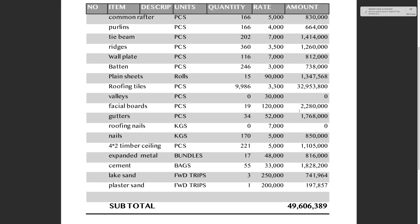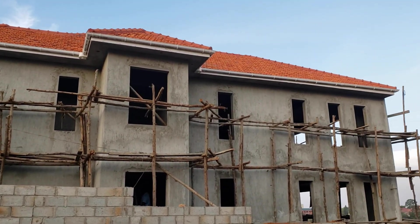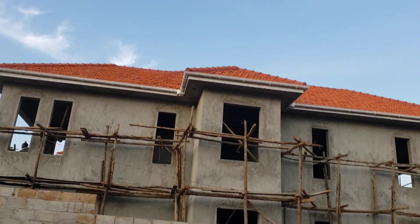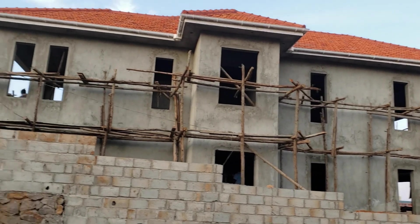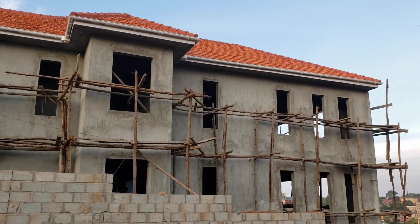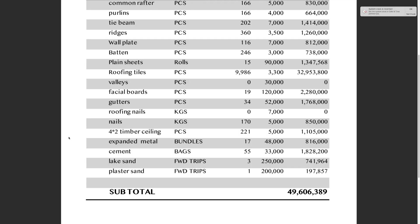Fascia boards — we bought 19 pieces of PVC fascia boards, each 5.8 meters long, at 120,000 shillings each, costing us 2,280,000 shillings. Gutters — we bought 34 pieces at 52,000 shillings each, costing us 1,768,000 shillings. Nails of four-inch, three-inch, and five-inch — combined, we bought 170 kg at 5,000 shillings per kg, costing us 850,000 shillings.